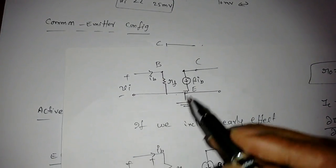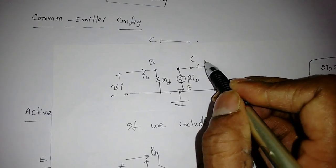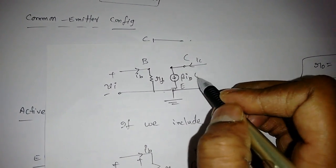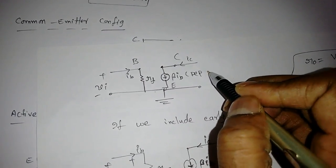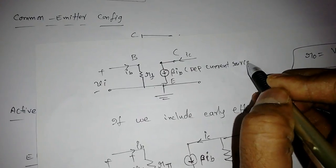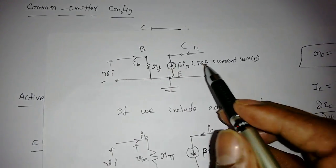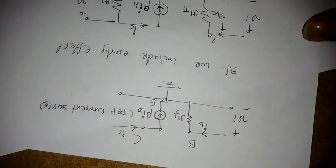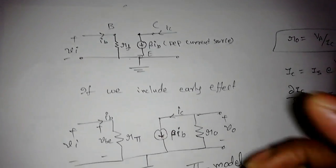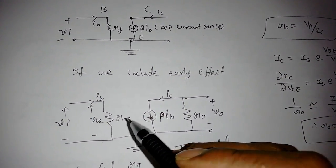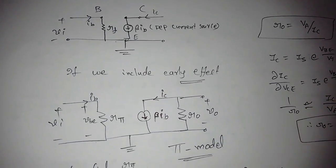The collector current IC equals beta times IB, so it is a dependent current source which depends on the input current IB. This is the small signal model of a common emitter configuration. If we rearrange it, it looks like the Greek letter pi, so it is called the pi model, and RF is also called r-pi.